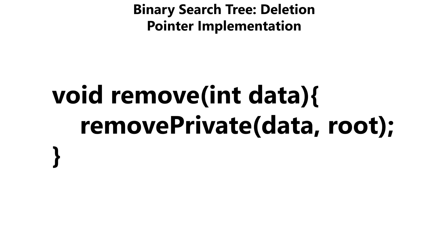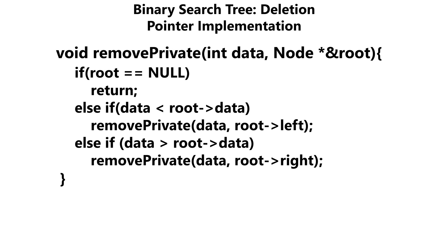Now from here, we have our remove method. Our remove method is going to take in the data that we want to remove from our tree, and we're going to call a method called remove private, passing in the data as well as the root pointer. Moving on, we have our remove private method, which is being passed in the data that we want to remove as well as the root pointer.